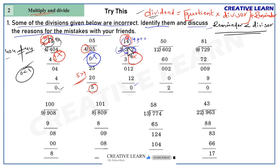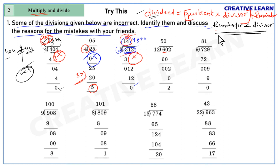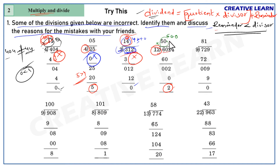Next, 602 divided by 12: remainder 2, divisor 12. Since 2 < 12, second rule is satisfied. First rule: 50 × 12 = 600, plus remainder 2 = 602, which equals the dividend 602. So this division is correct.